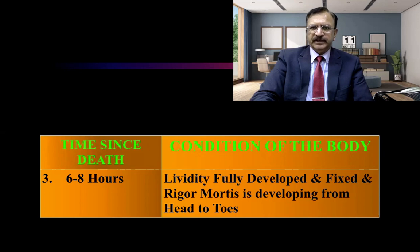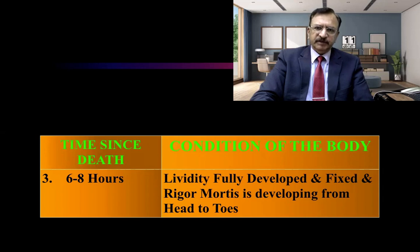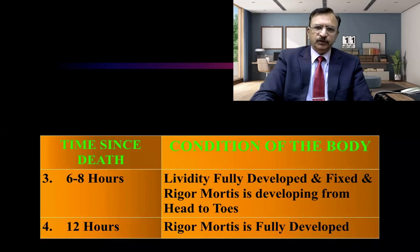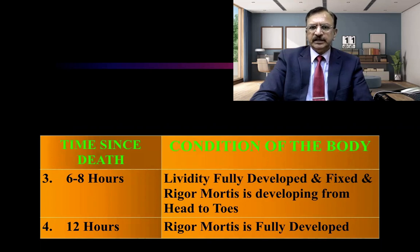Rigor mortis takes 12 hours to fully develop. So in six to eight hours, rigor mortis has started developing from head to toe. And in 12 hours, the rigor mortis is fully developed. Simultaneously, the post-mortem staining has also been fixed.